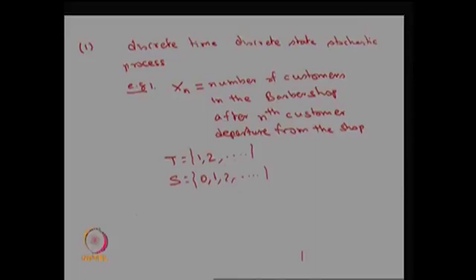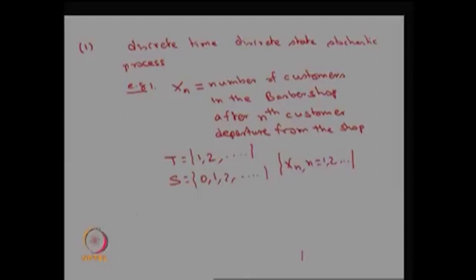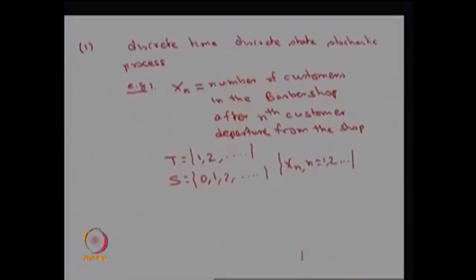Therefore the collection of random variables Xn for n = 1, 2, and so on is a discrete time, discrete state stochastic process. Please note that here the parameter space capital T is not time — it represents the nth customer, so n can be 1, 2 and so on. Usually capital T is time, but sometimes it could be a distance, length, number, or whatever other quantity.